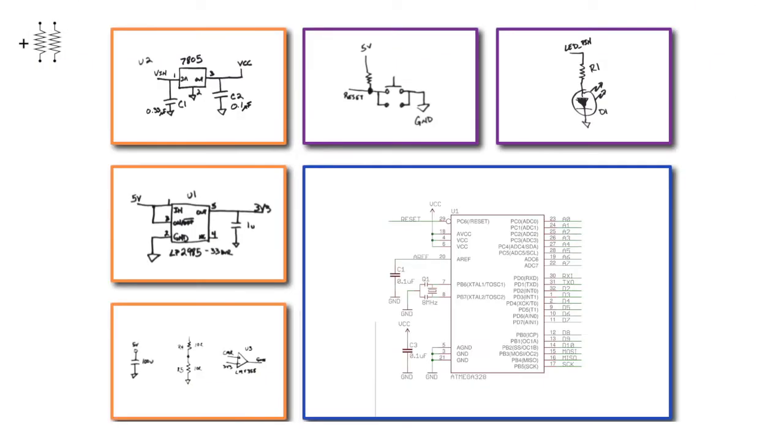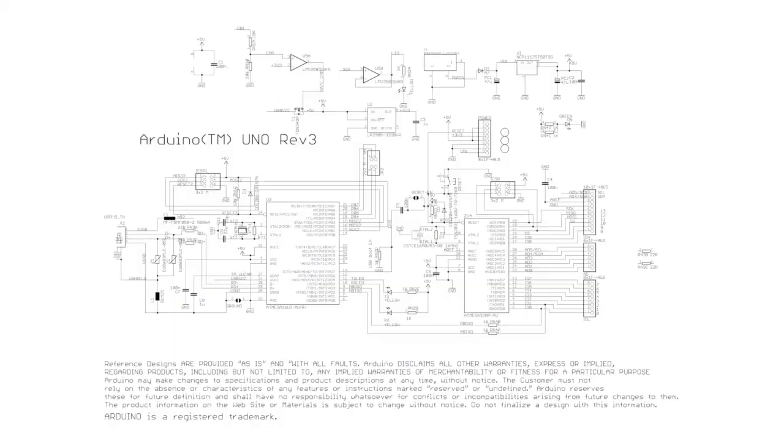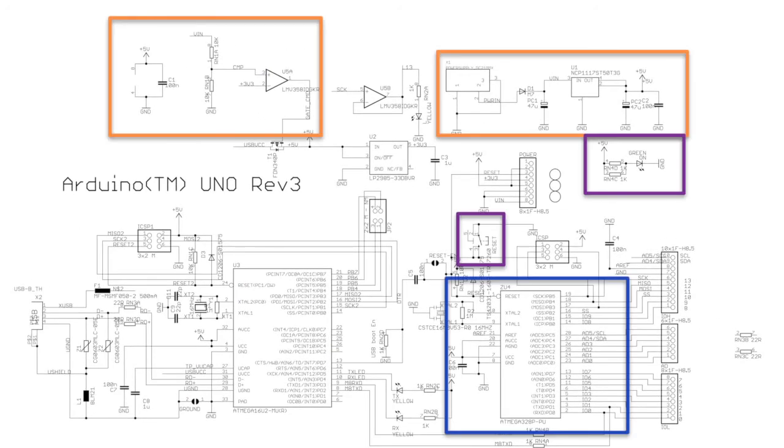So now we have all the parts of our circuit. Believe it or not, all of these circuits that we saw are pretty common across lots of different types of schematics, and in fact they're all found on the Arduino Uno reference schematic. This is the actual schematic from the Arduino website, and if I zoom in you can actually see the same blocks that we just drew, but you know, all nice and neat.